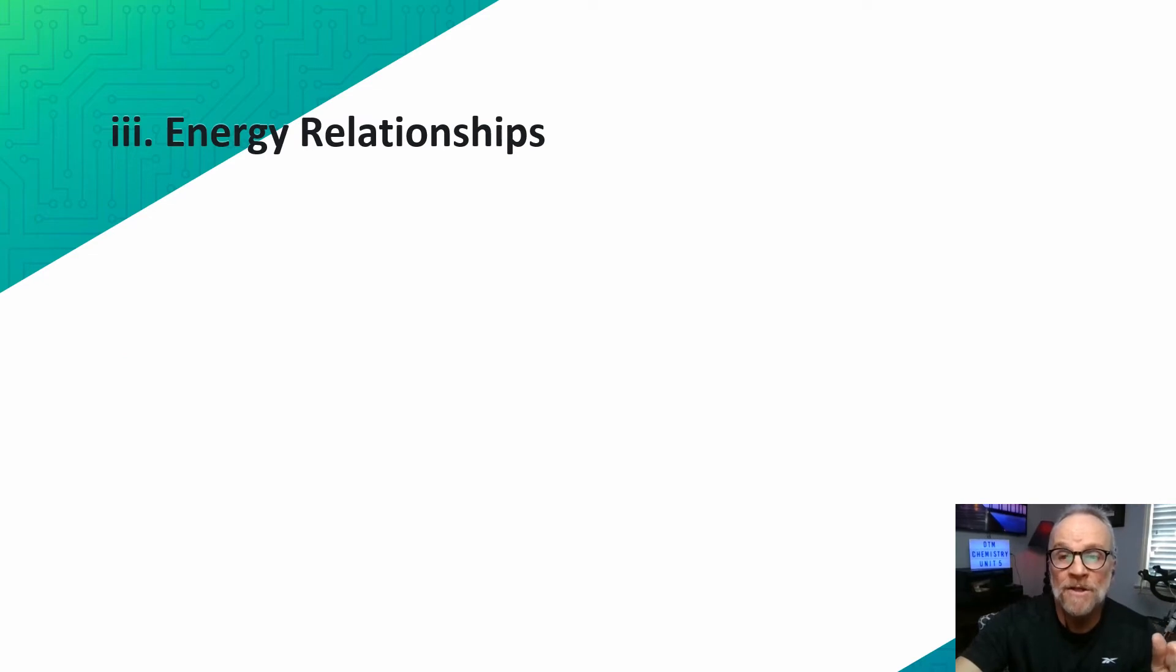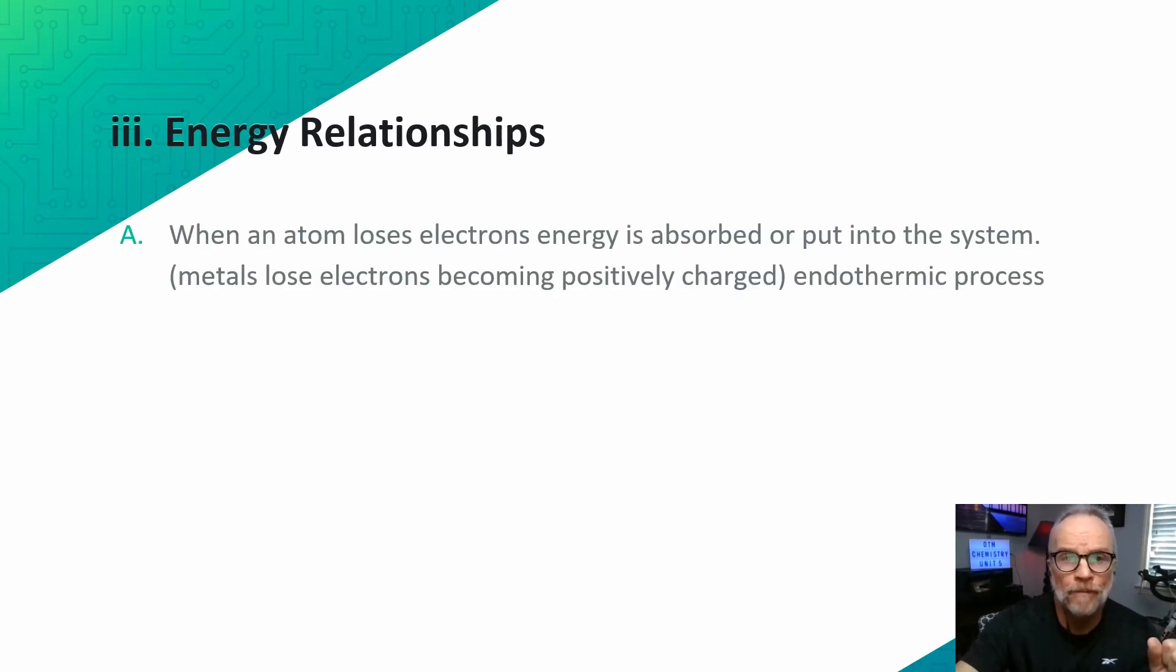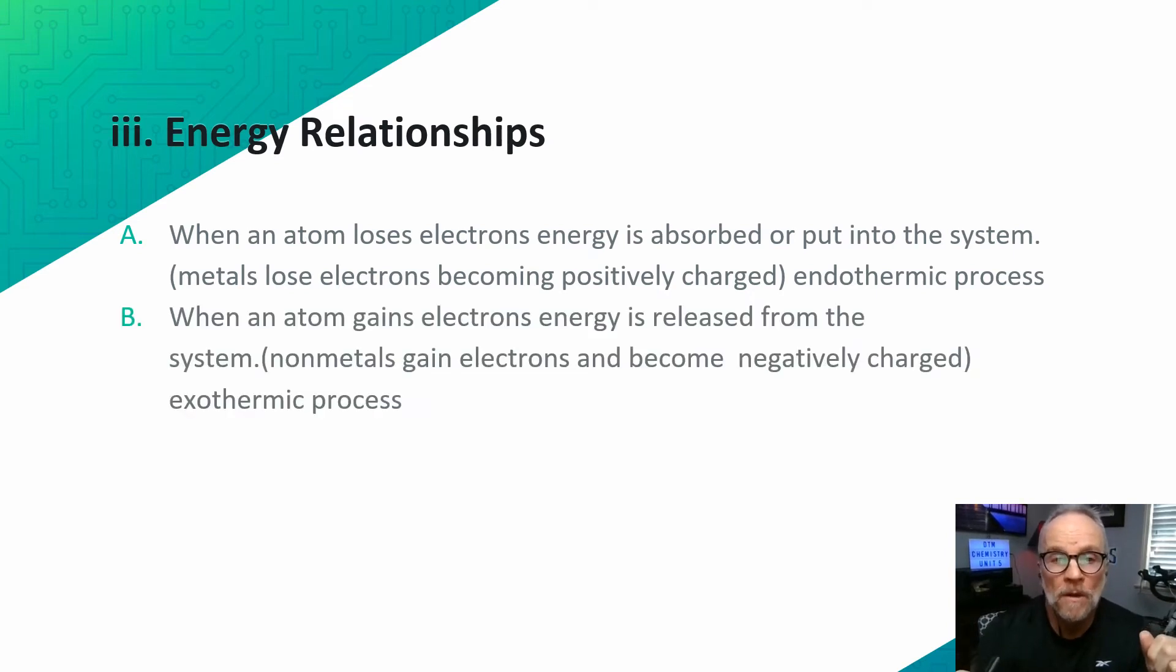Let's talk about the energy exchanges that happen as these bonds are formed. When an atom loses electrons, energy is absorbed or put into the system. Metals lose electrons, becoming positively charged. This is called an endothermic process. When an atom gains electrons, energy is released from the system. Nonmetals gain electrons and become negatively charged. So this is an exothermic process.